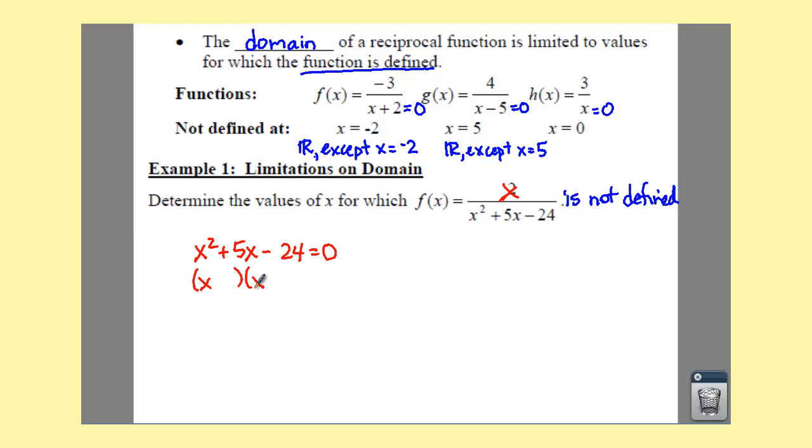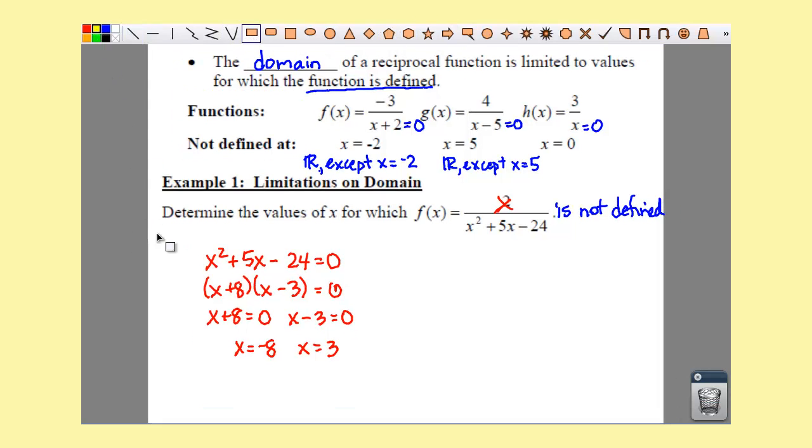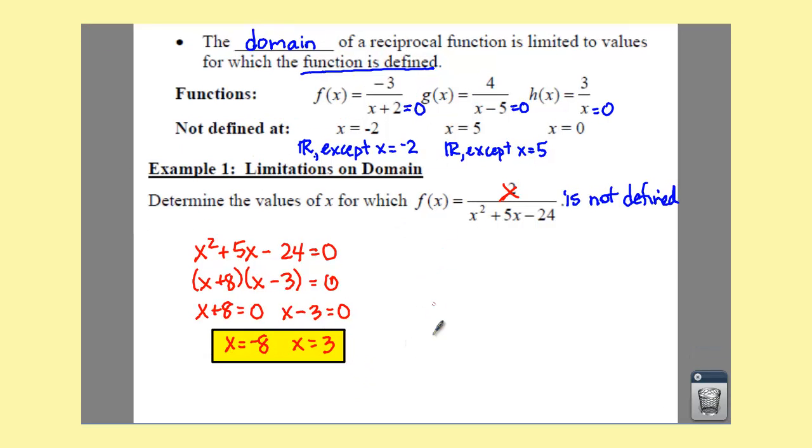So, that would be an x and an x, we need factors of negative 24 that add up to a positive 5, that would be a positive 8 and a negative 3. So, if we set each of these equal to 0, and solve, the values for which this is not defined would be at x equals negative 8, and x equals 3. So, whenever you have your limitations on your domain, or wherever you have to find your values that are not defined, that is just where you take your denominator, set it equal to 0, simplify it, and go on with the problem.